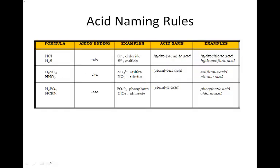As you get better with your ions, notice: if it ends in -ide, it'll be hydro-...ic acid. So chloride becomes hydrochloric acid, sulfide becomes hydrosulfuric acid. You need to copy this down — it's the attached reference sheet. If it ends in -ite, like sulfite or nitrite, sulfite becomes sulfurous acid and nitrite becomes nitrous acid. If it's -ate, like phosphate or chlorate, the H says 'hello, I'm an acid.'